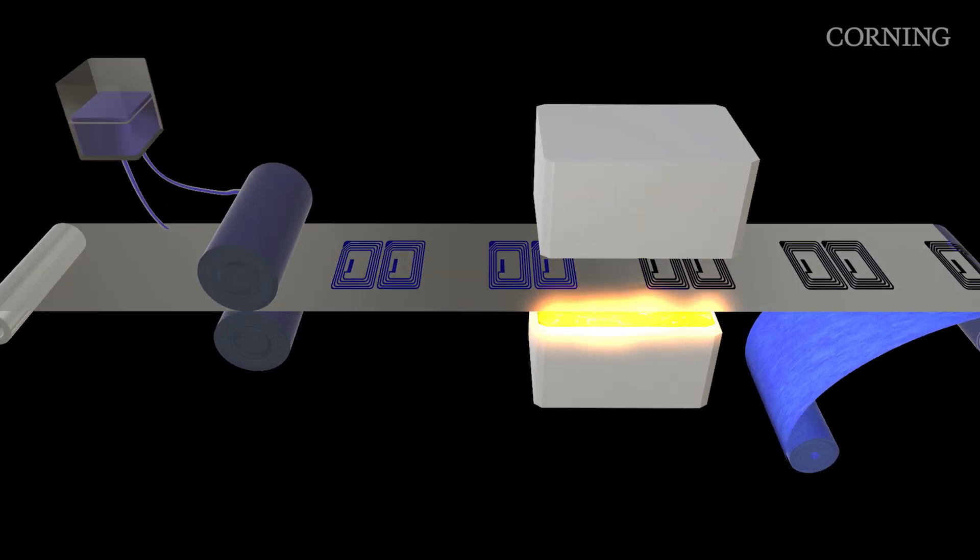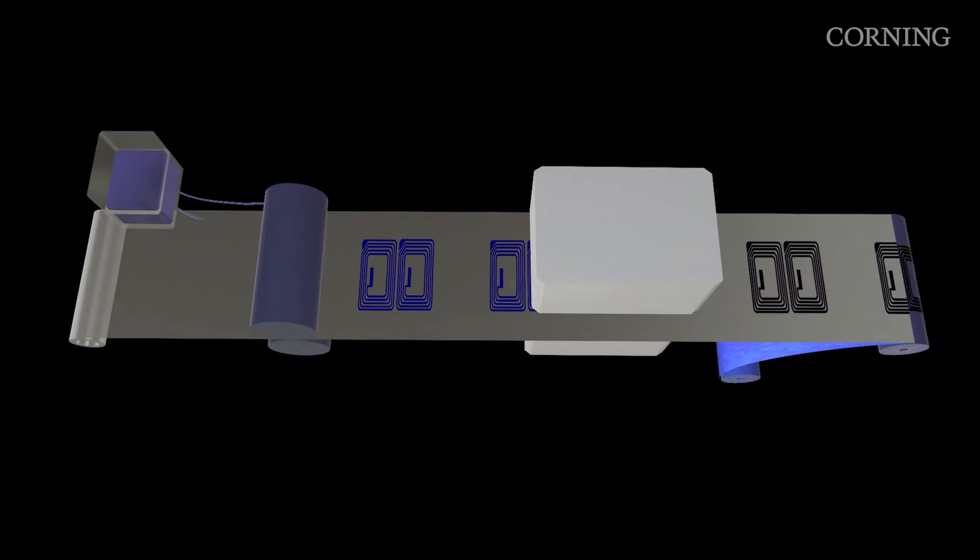As the printed substrate moves out of the kiln, the intricate circuitry is fully sintered and the temperature decreases rapidly. The printed substrate is then paired with an interleaf material and formed back into rolls.